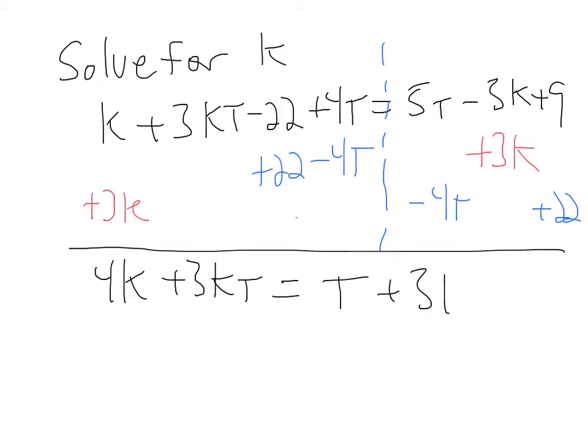And this is the hard part that people don't see. I've got two terms with k's in them, but they aren't like terms, because that's got a T with it. So, the way I can get it so I only have a single k, because that's what I want to solve for, is I'm going to factor out that k, or undistribute it.